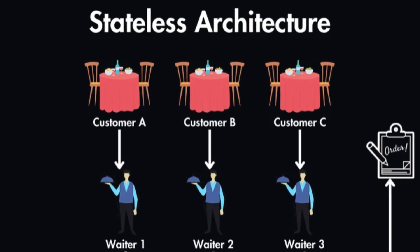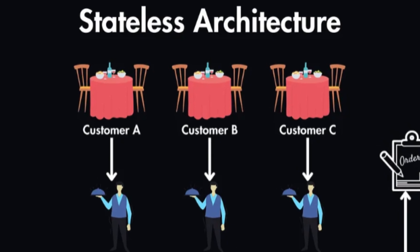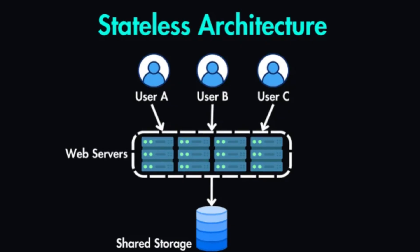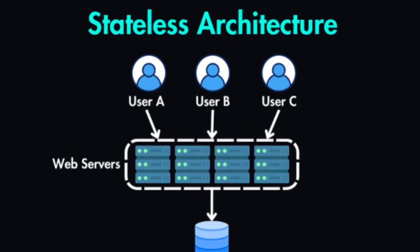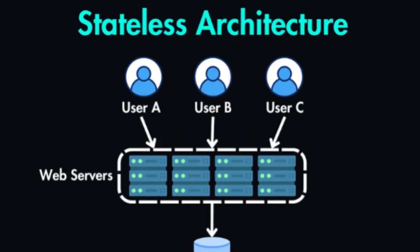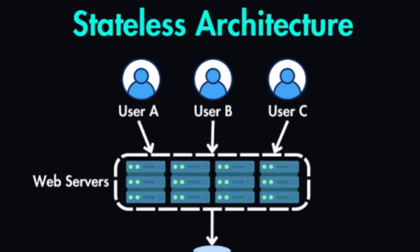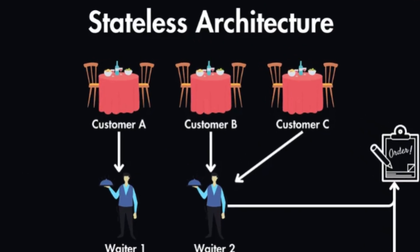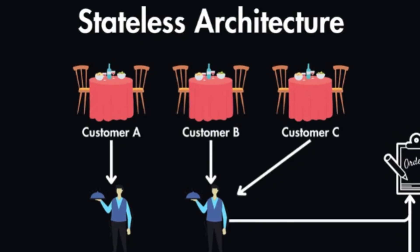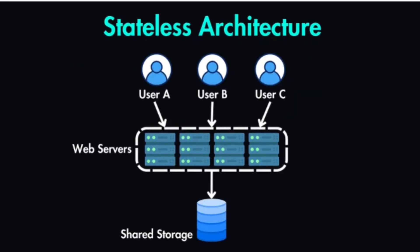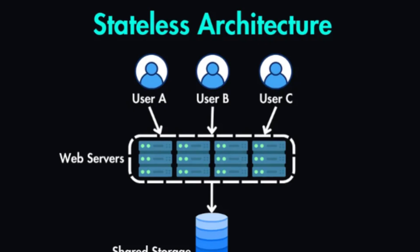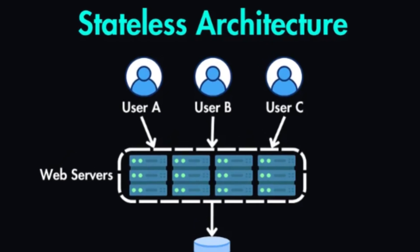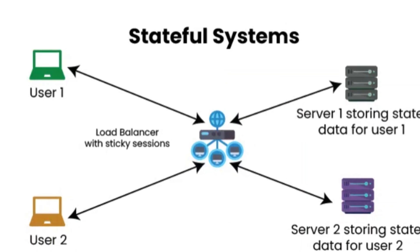Examples of stateless systems: HTTP (Hypertext Transfer Protocol), the fundamental protocol of the web, is inherently stateless — each time your browser requests a web page, it's a new, independent request. RESTful APIs are designed to be stateless, meaning each API request contains all the information needed to process it. Many microservices are often designed to be stateless for better scalability and flexibility.